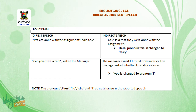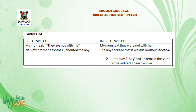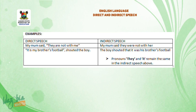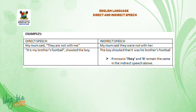Note: the pronouns 'they', 'he', 'she', and 'it' do not change in the reported speech. Examples: My mom said they are not with me. — My mom said they were not with her. 'It is my brother's football,' shouted the boy. — The boy shouted that it was his brother's football. Pronouns 'they' and 'it' remain the same in the indirect speech.